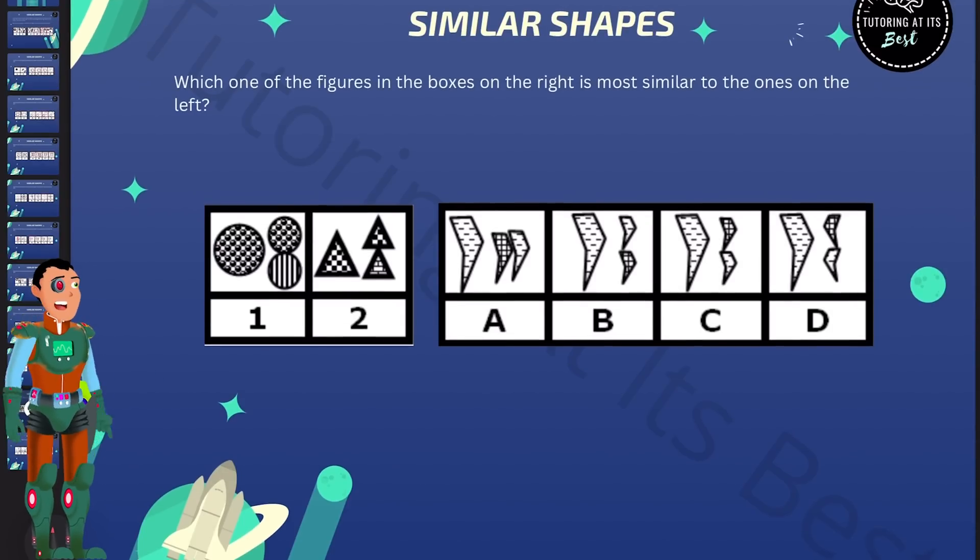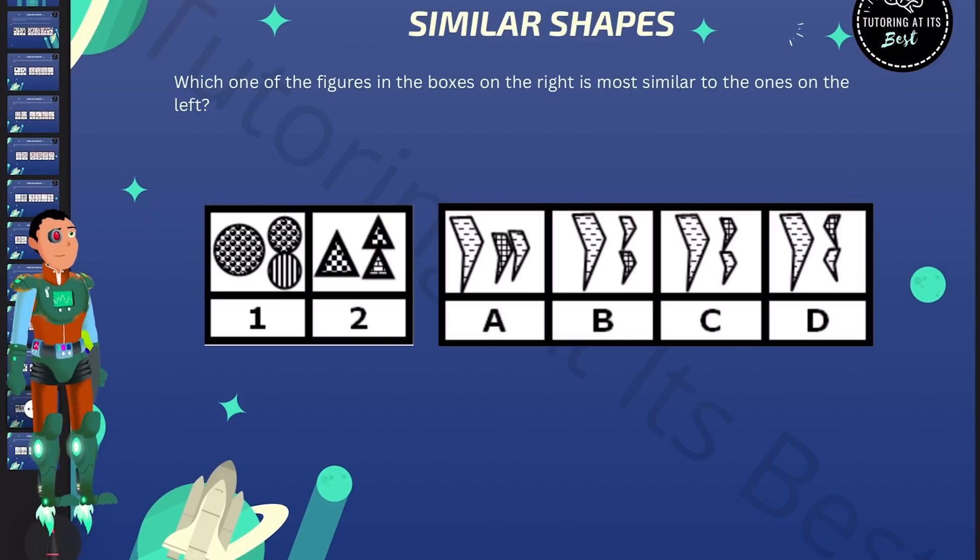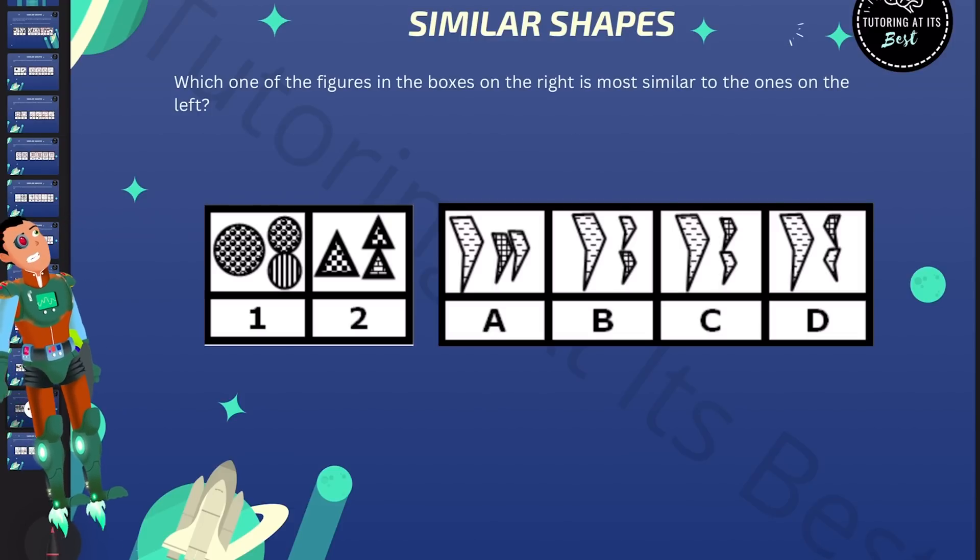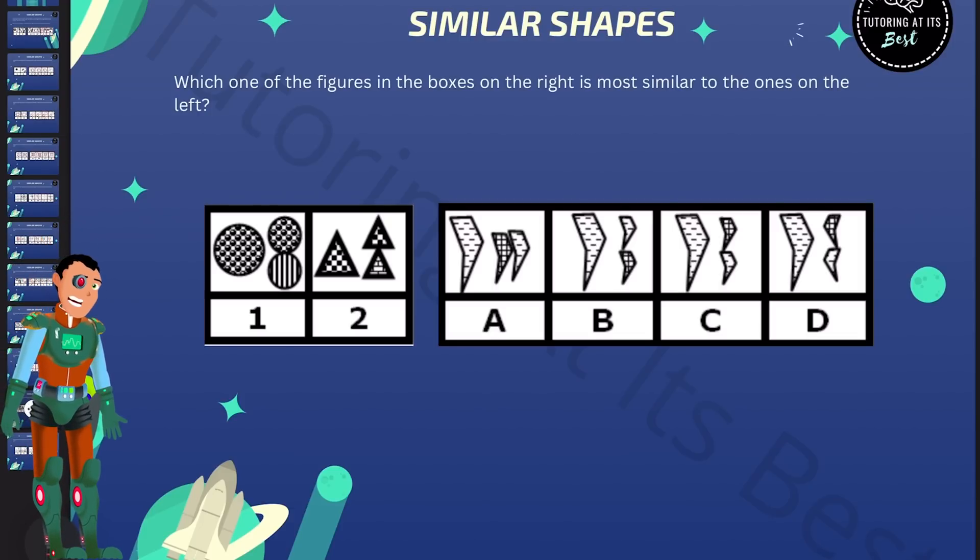Over to the second last question here. What do we notice? Well, in each figure, there's an angled arrow and two smaller arrows.